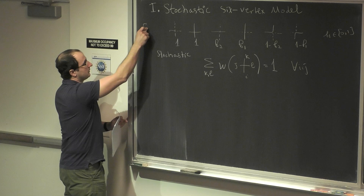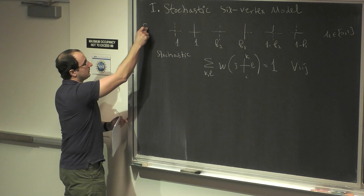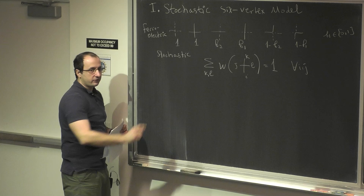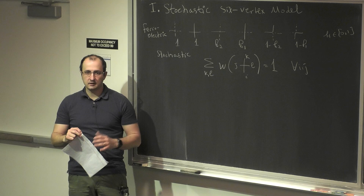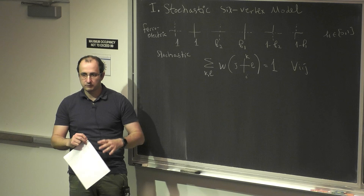In the six-vertex language, this is the so-called ferroelectric phase, which means that the model sometimes behaves like a dimer model, conjecturally. It doesn't exhibit gaseous phases; there is no gas. You cannot put boundary conditions so that these weights will give you gas, conjecturally.